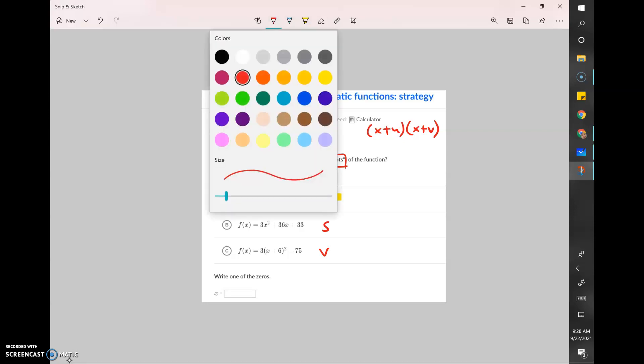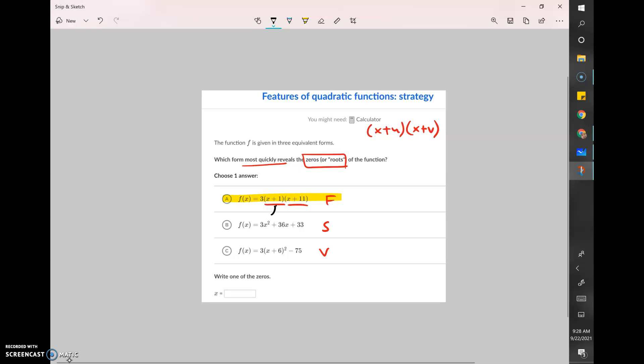We want the one that reveals the x-intercepts, which is factored form. And then we're just figuring out what the x-intercepts are. There's two of them, so we're just looking to see what number here would create the zero. So x would equal negative one, that would create a zero. Negative one plus one would be zero. And then what number would create the zero here? Negative 11 plus 11 would create a zero, so our second answer is negative 11. We can choose either of these answers for our box, so we put in negative one or we could put in a negative 11.